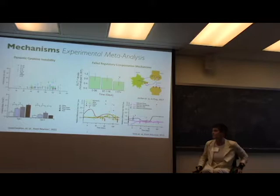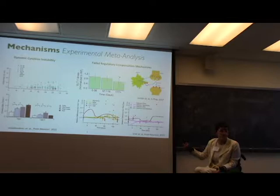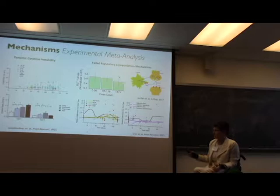What you're looking at up here: to the left was cytokine instability, so that's looking at inflammation and how inflammation changes over time, which markers are the best for inflammation. Over here on the right, we're looking more at failed compensatory mechanisms.